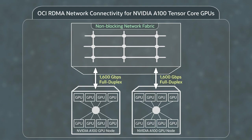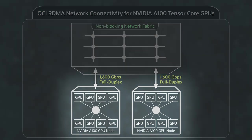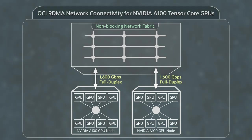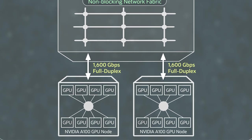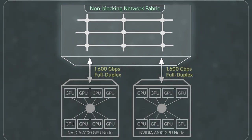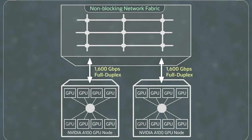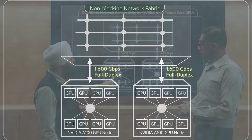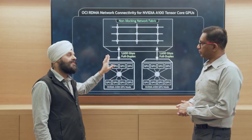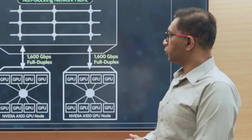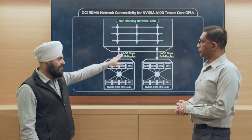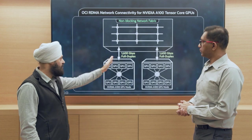Let's take a look at a schematic here — this is a high-level drawing. We're showing two GPU nodes at the bottom where each node is comprised of eight NVIDIA A100-class GPUs interconnected using NVIDIA NVLink. The GPU nodes themselves connect to what we call the network fabric, which provides a non-blocking interconnect between all the GPUs. Each GPU node connects to the fabric at 1.6 terabits per second, or 1600 gigabits per second. So each GPU gets 200 gigabits per second of proportional bandwidth.